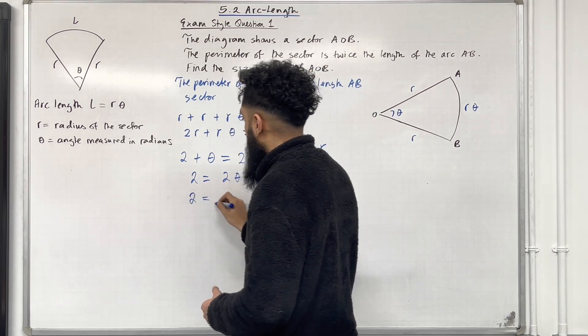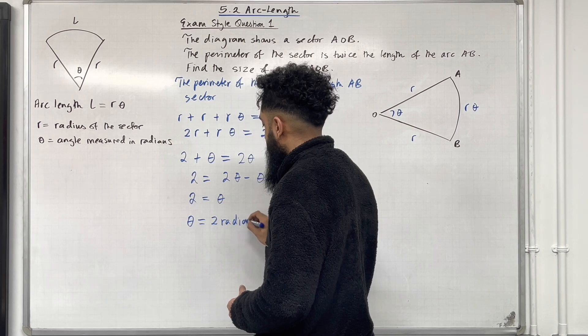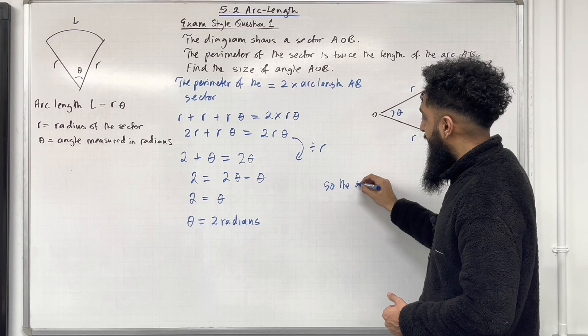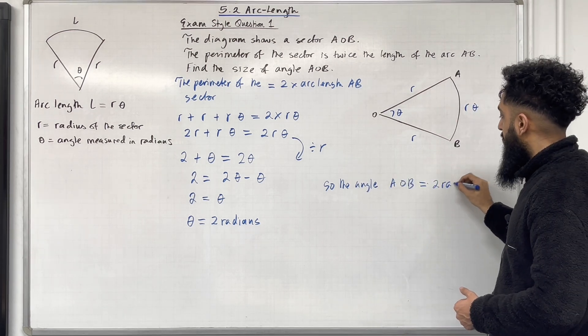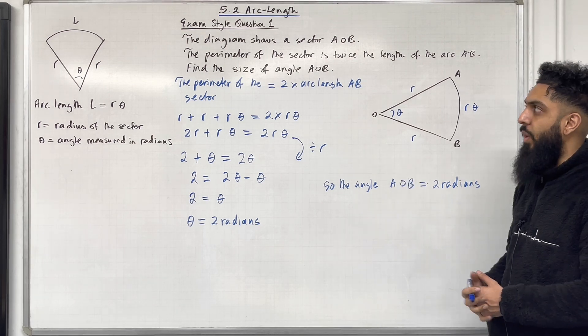2 equals theta. We have that theta is 2 radians. So the angle AOB is equal to 2 radians. That completes exam style question 1.